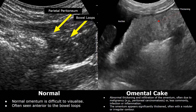In normal cases, the omentum is not really visible on ultrasound. It might be visible just anterior to the bowel in most cases, but in normal cases we do not really see it. This thin structure is the parietal peritoneum. The bowel loops are posterior to the peritoneum, and the omentum is between these two layers.